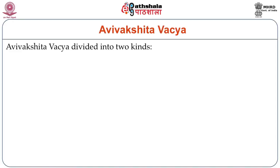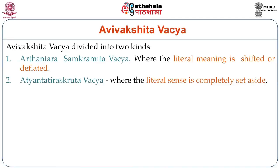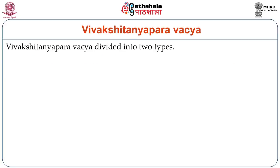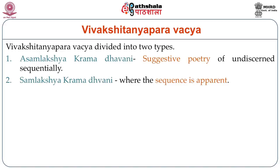Avivakshita vachya Dhvani is divided into two kinds: Ardhanta sankramita vachya, where the literal meaning is shifted or deflated; and Atyanta tiraskruta vachya, where the literal sense is completely set aside. Vivakshita nyaparavachya Dhvani is also divided into two types: Asamlakshakrama Dhvani — suggestive poetry of undiscerned sequentiality — and Samlakshakrama Dhvani, where the sequence is apparent.